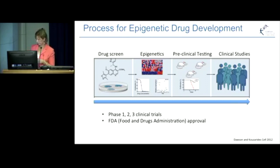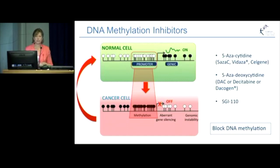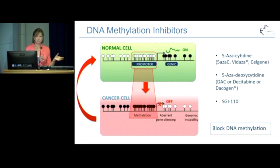Going back to DNA methylation, I show here three examples of DNA methylation inhibitors which have been clinically validated. The first two are in clinical use, and the third molecule is showing great promise and is in phase 3 trials. These DNA methylation inhibitors block DNA methylation — they remove those DNA methylation marks to revert to a more unmethylated structure.